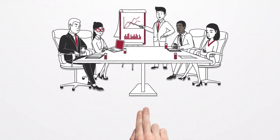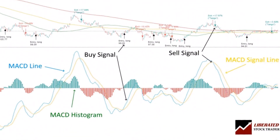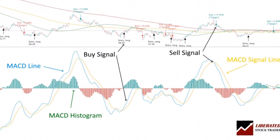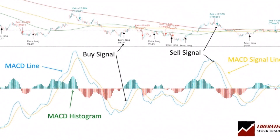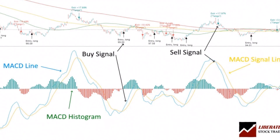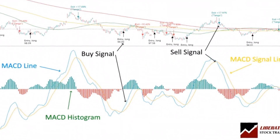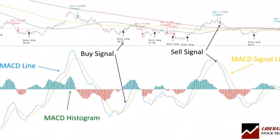Traders will often use the MACD indicator to identify potential entry and exit points in a market. A 9-day exponential moving average of the MACD, known as the signal line, can be used as a trigger for buy and sell signals. When the MACD crosses above the signal line, it is seen as a bullish sign that could indicate a potential buying opportunity. Conversely, when the MACD crosses below the signal line, it is seen as a bearish sign that could indicate a potential selling opportunity.